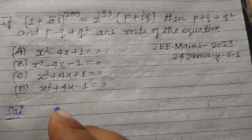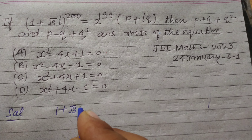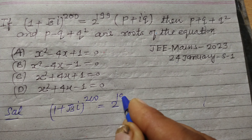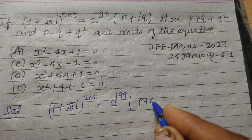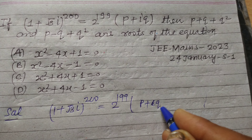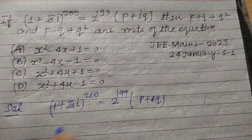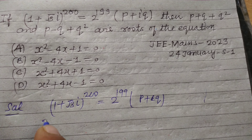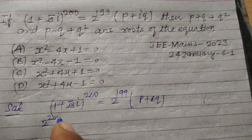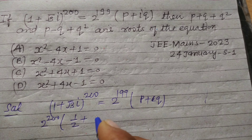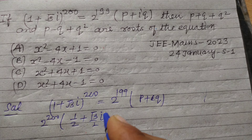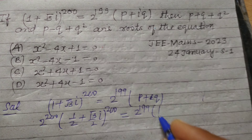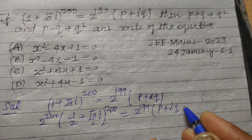So students, first we write the given condition: (1 + √3·i)^200 = 2^199·(p + i·q). We take 2^200 common from this, and it becomes 2^200 into (1/2 + (√3/2)·i)^200, and this equals 2^199·(p + i·q).